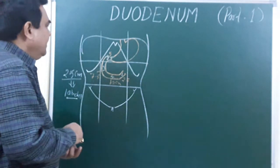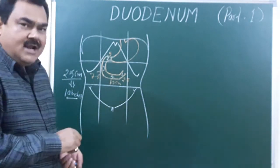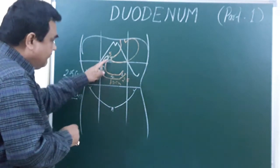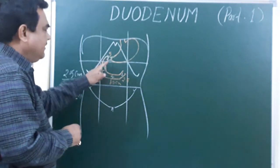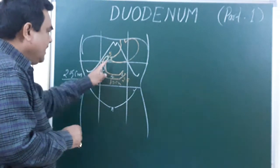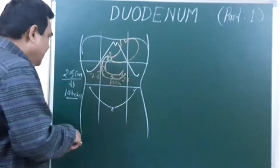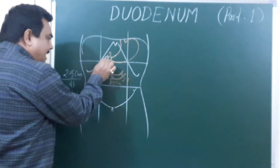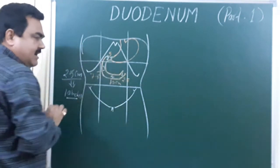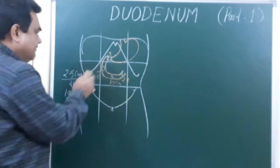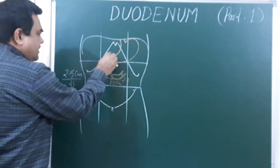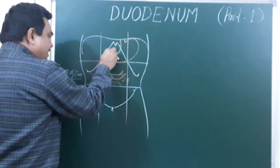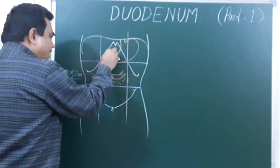Looking at the relations of the first part of the duodenum, this first part can be divided into proximal and distal halves. The proximal half of the first part is covered by peritoneum on both sides.